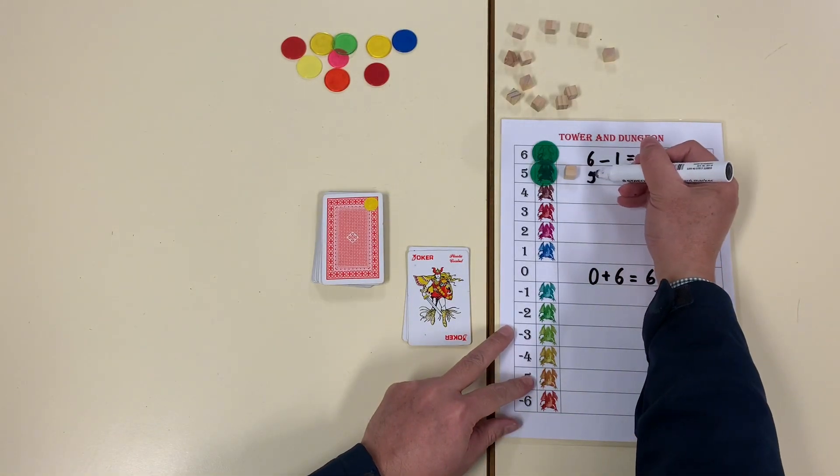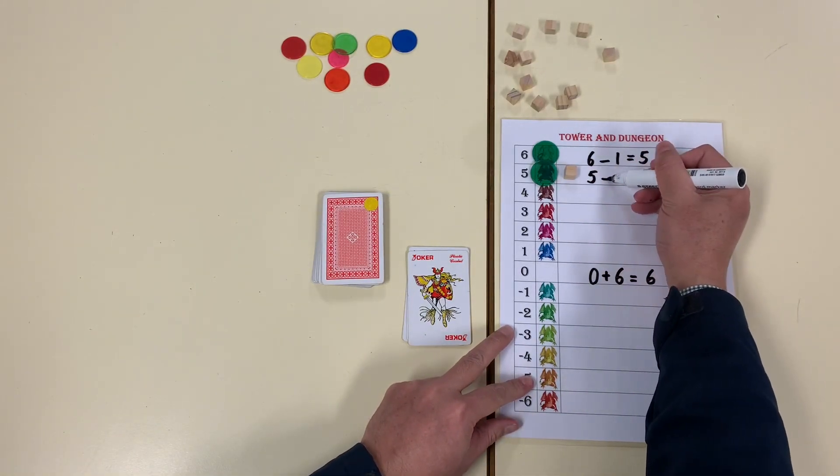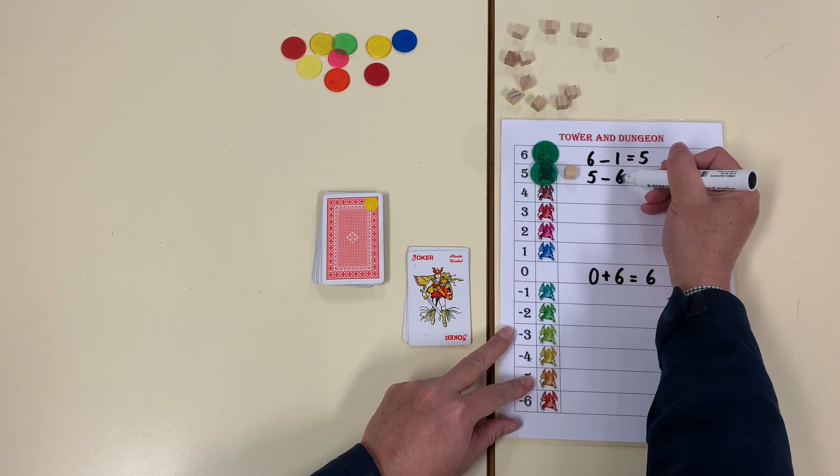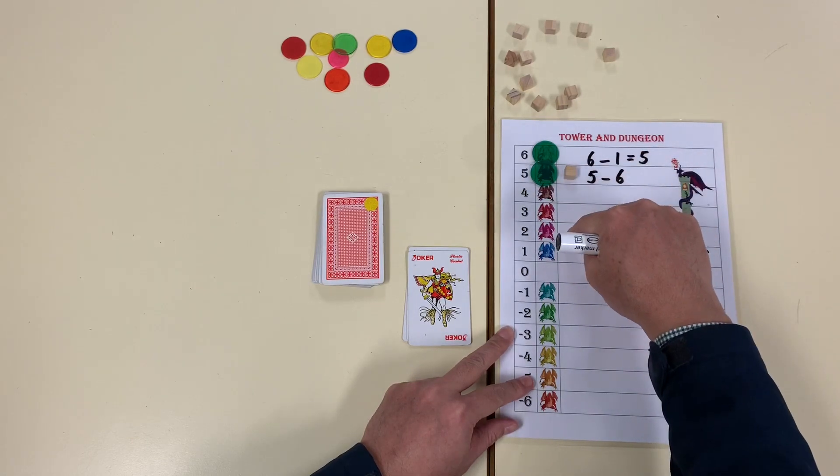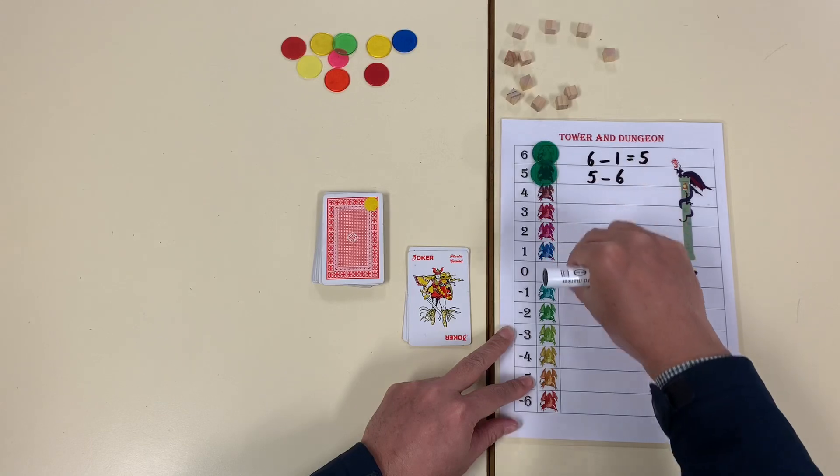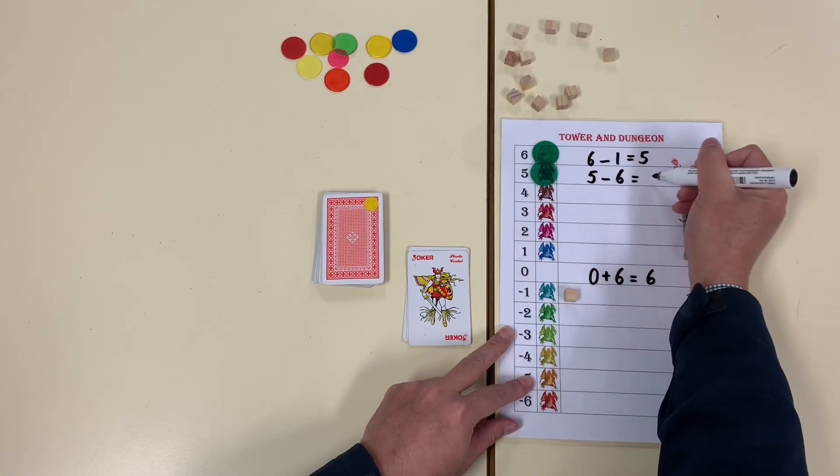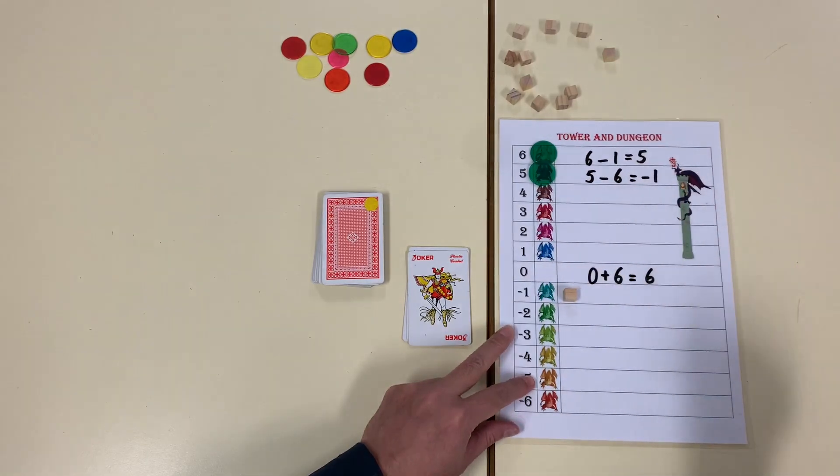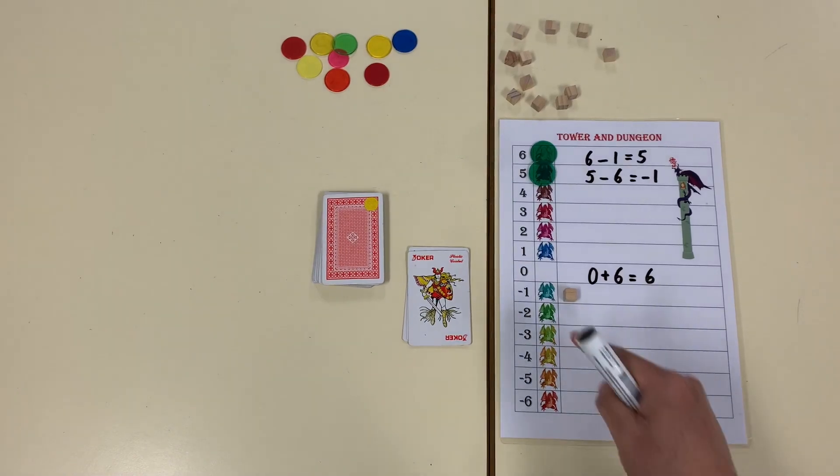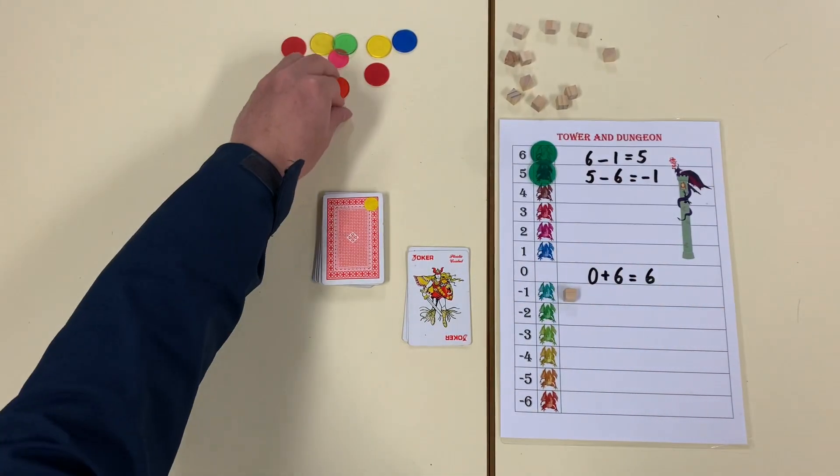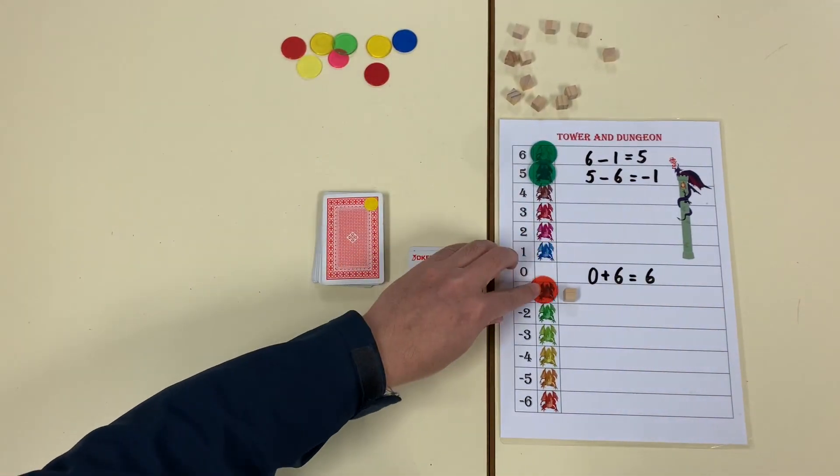So I'm on five. I'm going to go down six places. One, two, three, four, five, six. I'm going to be minus one. And floor minus one, I'm going into the dungeon now. I just slayed an aqua dragon there.